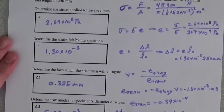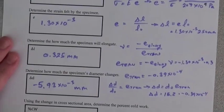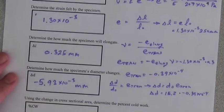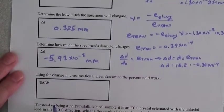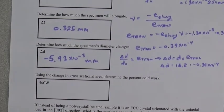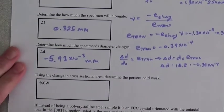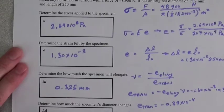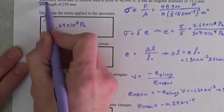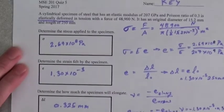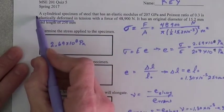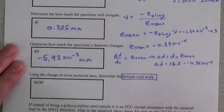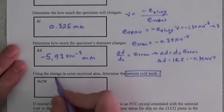So these first four steps were all about the stress-strain relations. Now we're asked, using the change in cross-section area to determine the percent cold work. Well, this is a trick question, inasmuch as we're talking about cold work and this is all elastic. So to say that something is elastically deformed is to say that there is no cold work because there's no dislocations. Zero.